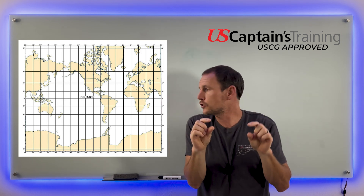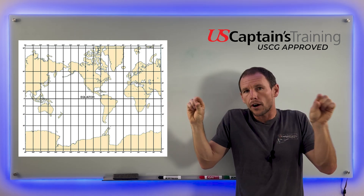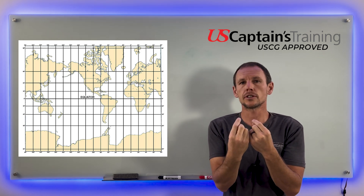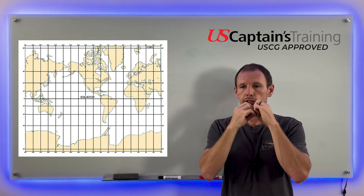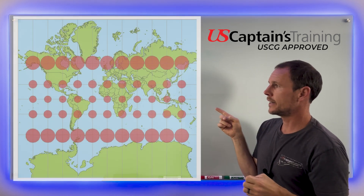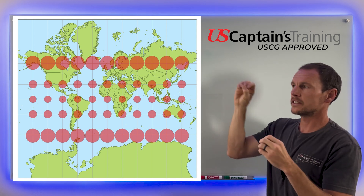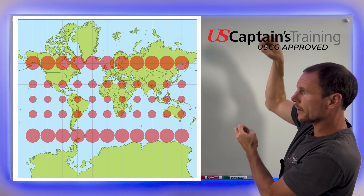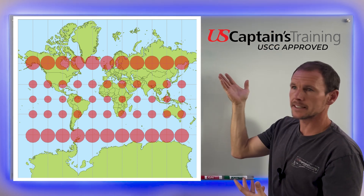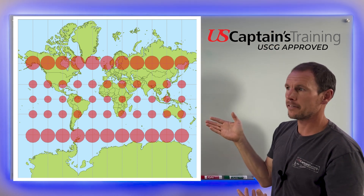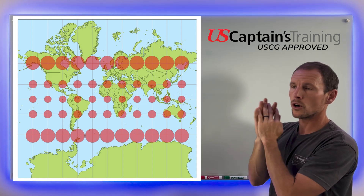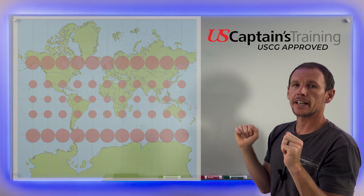Another good example is Antarctica — see how it's all the way across the bottom? That's because it's all the way around the bottom of the planet; it's not that it's huge or the largest continent, it's just stretched out because of the Mercator projection. Here's another image showing dots that get bigger as you go north and south. Look at the size of Greenland compared to the US compared to Africa — Africa and the US are decently close to the equator, while Greenland is way north, so the top of Greenland especially appears gigantic.